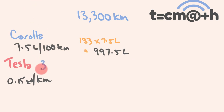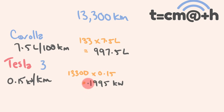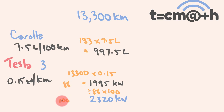What about the Tesla? It's using 0.15 kilowatts per kilometre, which is a simple multiplication. We've got 13,300 kilometres multiplied by 0.15 kilowatts, which gives us 1,995 kilowatts per year. But once again, this is the 86% figure. To get the 100% efficiency figure, we divide by 86 and times by 100, which gives us 2,320 kilowatts — the actual amount you'd be putting in.